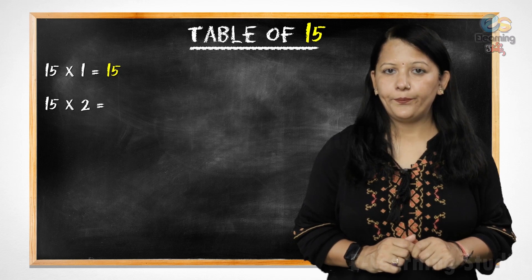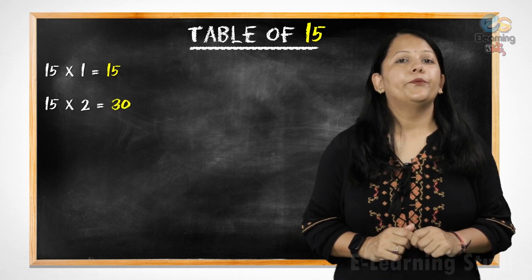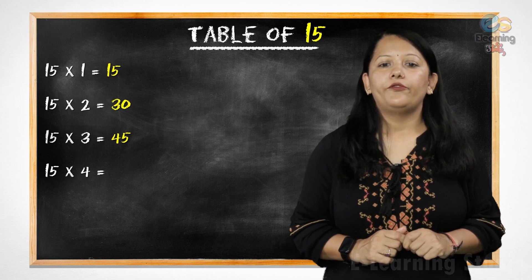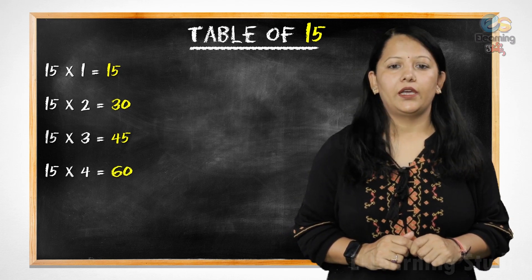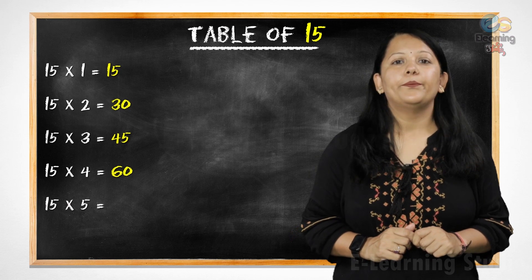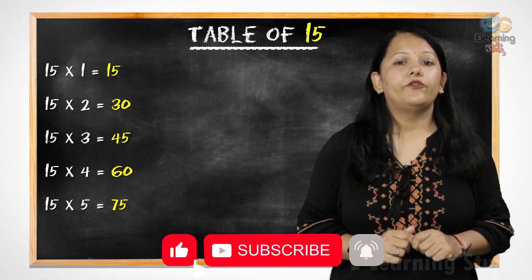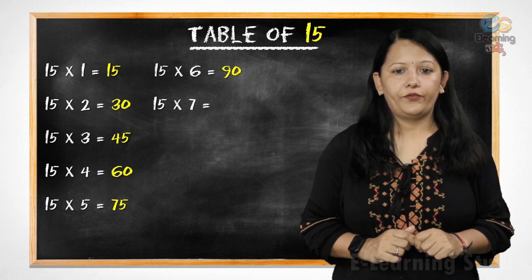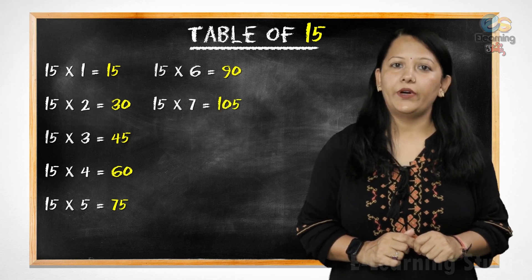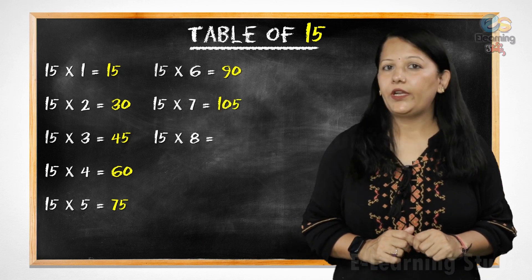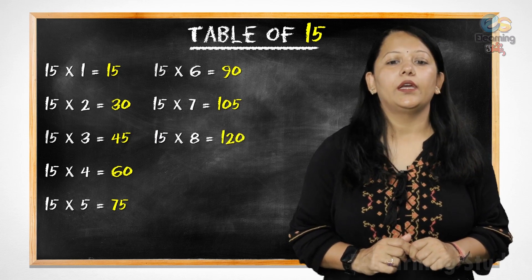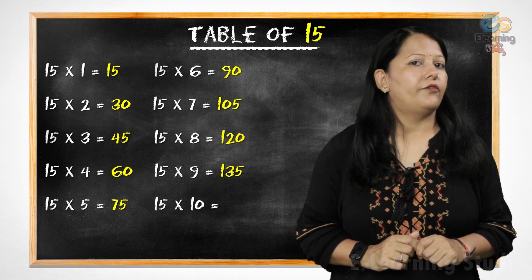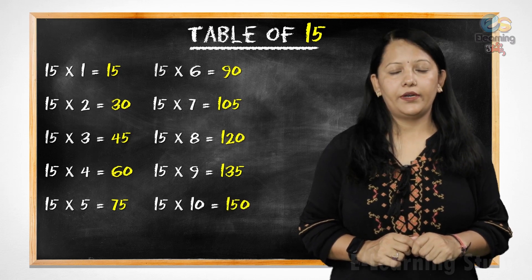15 twos are 30, 15 threes are 45, 15 fours are 60, 15 fives are 75, 15 sixes are 90, 15 sevens are 105, 15 eights are 120, 15 nines are 135, 15 tens are 150.